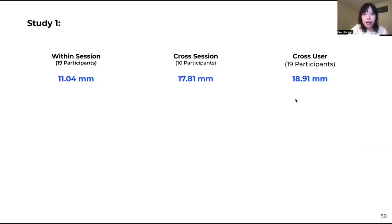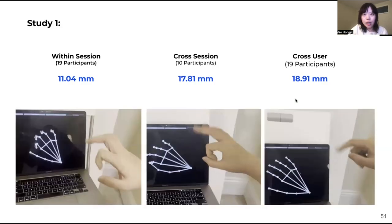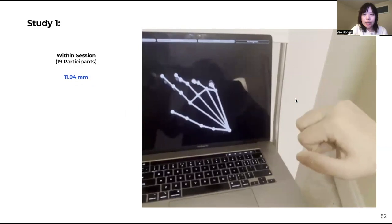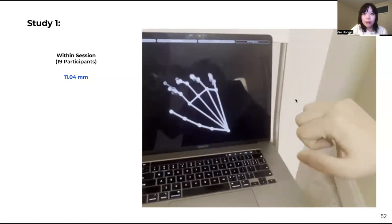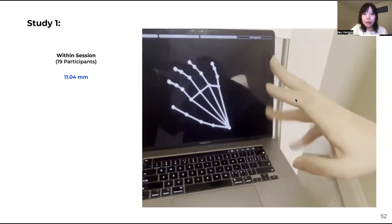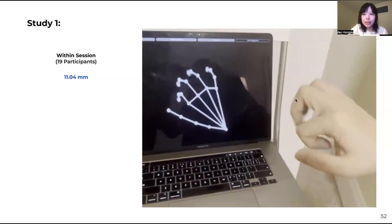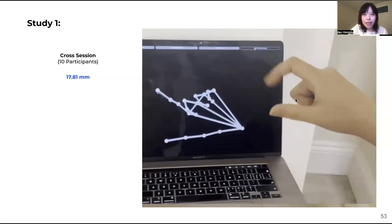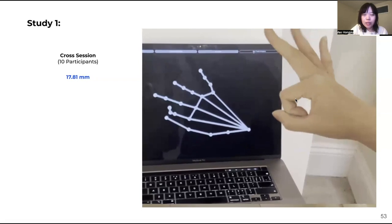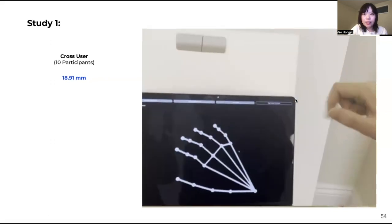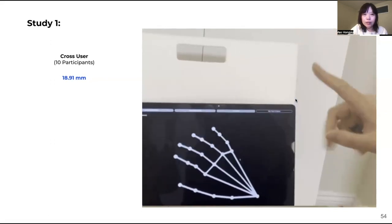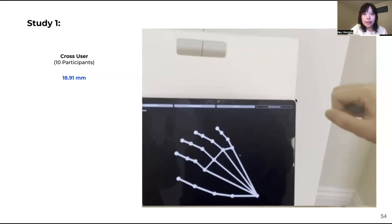We did notice the accuracy drop among our more complex configurations from within-session to cross-session to cross-user. In the first evaluation within-session, we found an error of 11 millimeters, showing that our system could accurately predict hand joint positions, even for some subtle movements like pinch. In the next evaluation of cross-session, errors slightly increased to 13 millimeters. And lastly, in a cross-user evaluation, errors are higher at 19 millimeters.